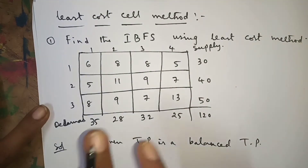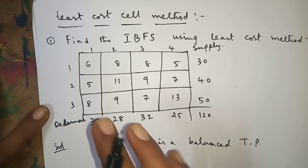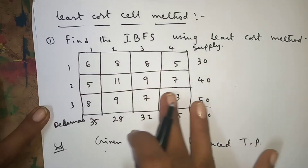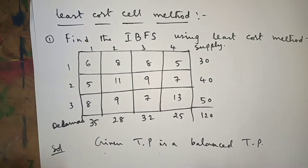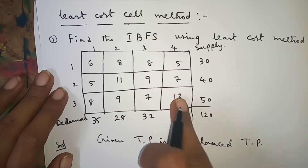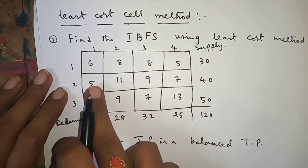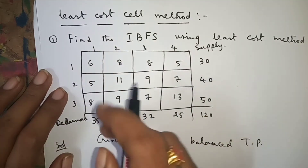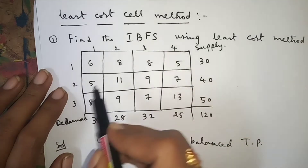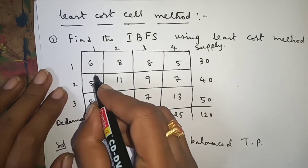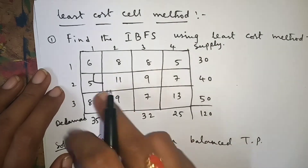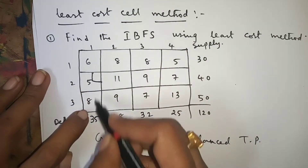These elements are the cost matrix elements. Now observe the complete given table. In this complete table, the least element out of all values is 5. There are two 5s — that is your choice, you can go either one. I entered into the cell with 5 because 5 is the least element. See the corresponding demand and corresponding supply.